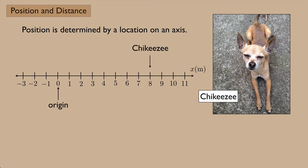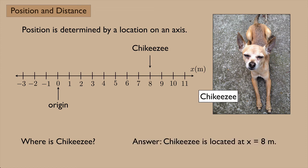So if Chiquisi is right here, where is Chiquisi? We would say that Chiquisi is located at x equals eight meters.